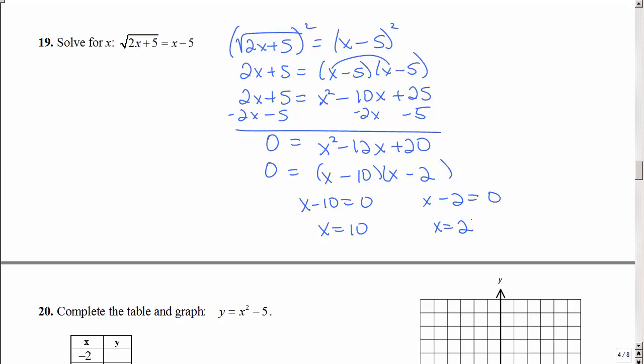Am I done? No. You have to check your answers back up into the original problem. So we have to check, so let's check 10. So the square root of 2 times 10 plus 5, does that equal 10 minus 5? Well, let's see, that's 20 plus 5, and that's 5. Yes, that's a good one.